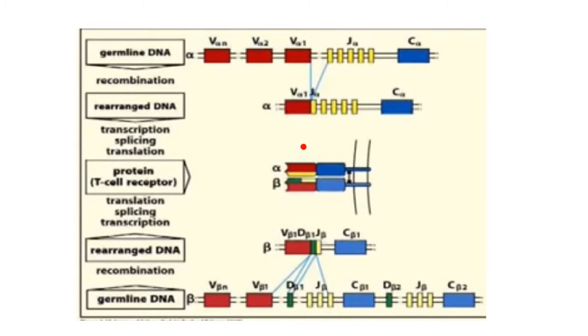So in the middle here, we have the completed T cell receptor. And remember, I said there's an alpha chain and a beta chain. Up here, we're getting a look at how the alpha chain is put together. And down here, we're getting a look at how the beta chain is put together. So each chain is made up of essentially three elements. There's the variable element, the V. Then there's the diversity element, which is the D. The diversity region is not on the alpha chain, but it is on the beta chain. And then there's a joining segment noted with a J.